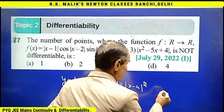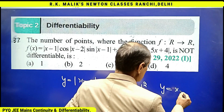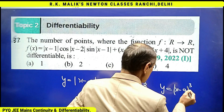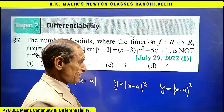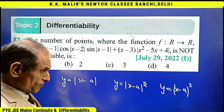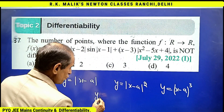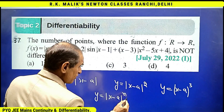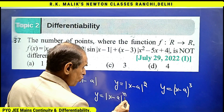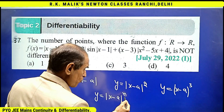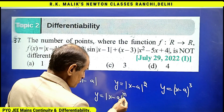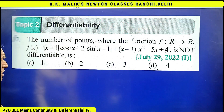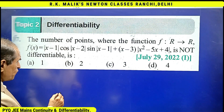For example, |x - a|³ is also differentiable at x = a. In general, y = |x - a|^n for any n greater than one means the function will be differentiable at x = a. This is the next key point to take care of.